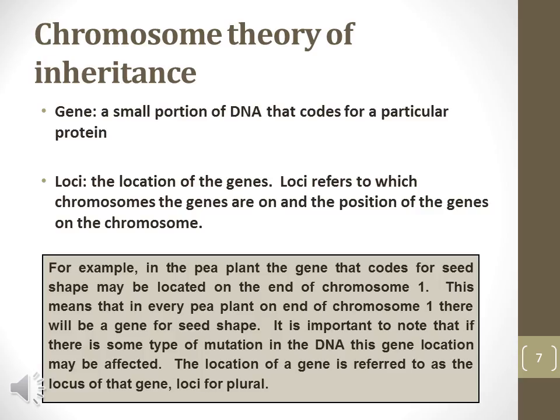The chromosome theory of inheritance replaced the pangenesis theory and explains that genes on chromosomes code for proteins that express traits. Loci refer to the physical portions on chromosomes where genes are located. Genes may be identified by which chromosome they are located on, as well as the position on the chromosome.